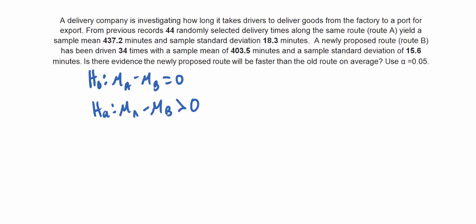So once we've obtained our null and alternative hypothesis, then we should check conditions. We need to make sure that our two samples are random. In this case, we do have one random sample for route A. And for route B, it just says that it was driven 34 times. So perhaps maybe it isn't a random sample, but it's most likely representative. So we're going to say that these conditions are met for now.